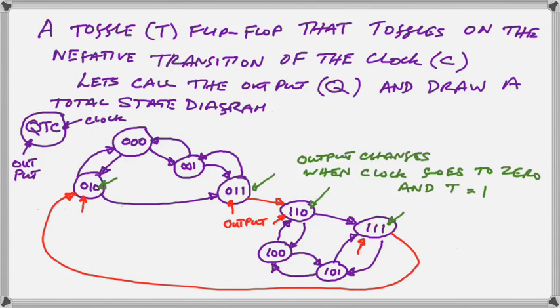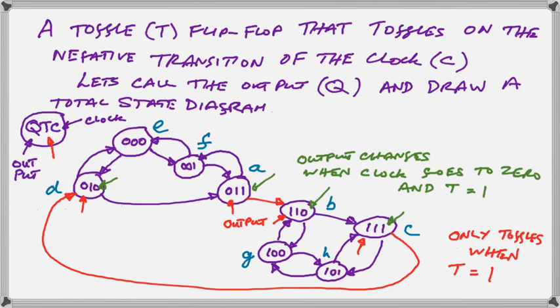What do we do next? Well, we know that we can number these, or should we say, label these states with letters, and we need to do that. So we've chosen the letters A to H. Now, why have we put the A on 011? Well, that's the beginning of where the action starts to happen.